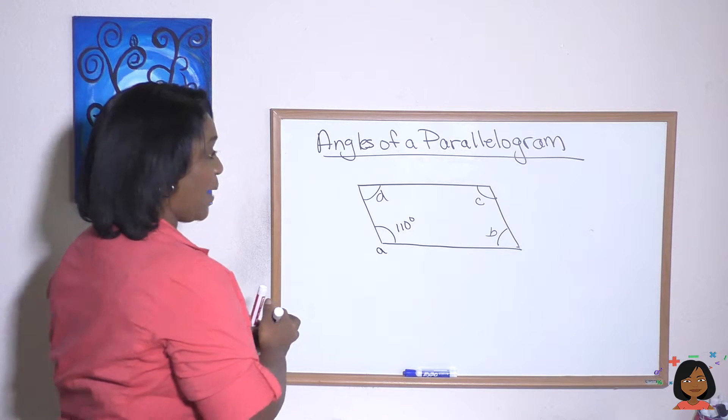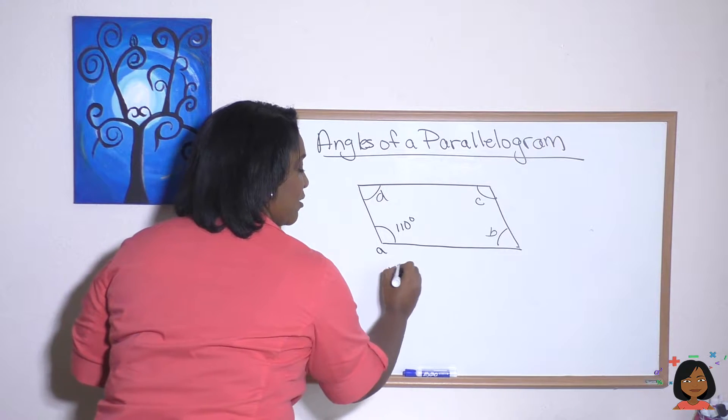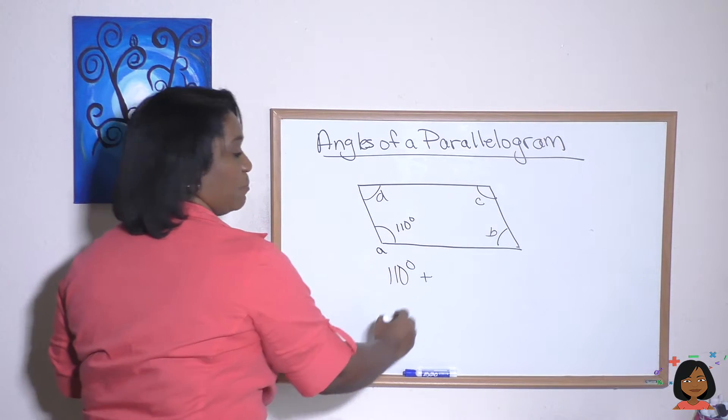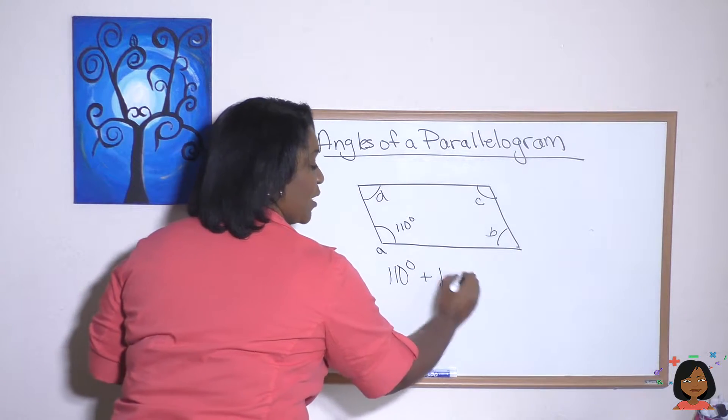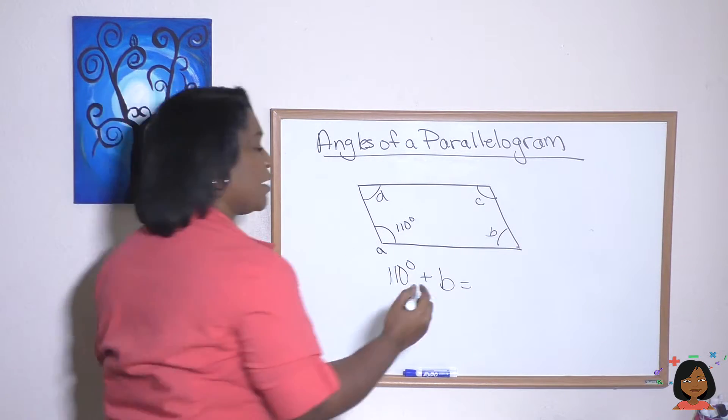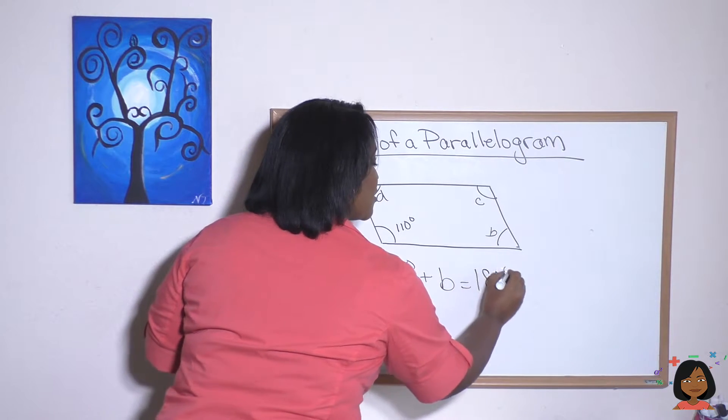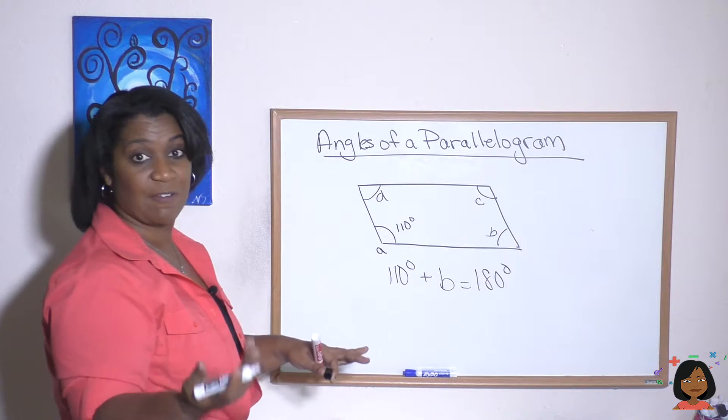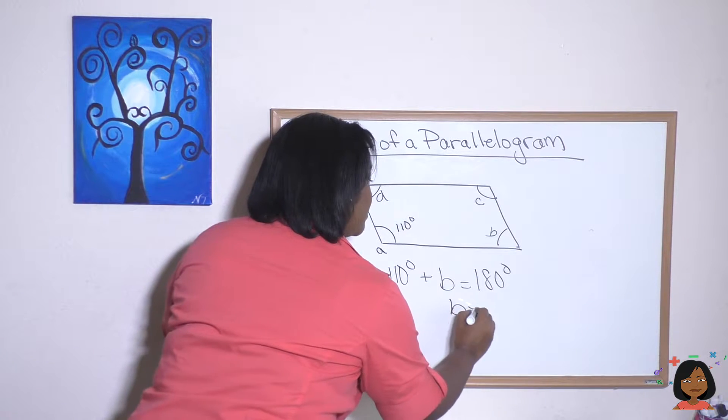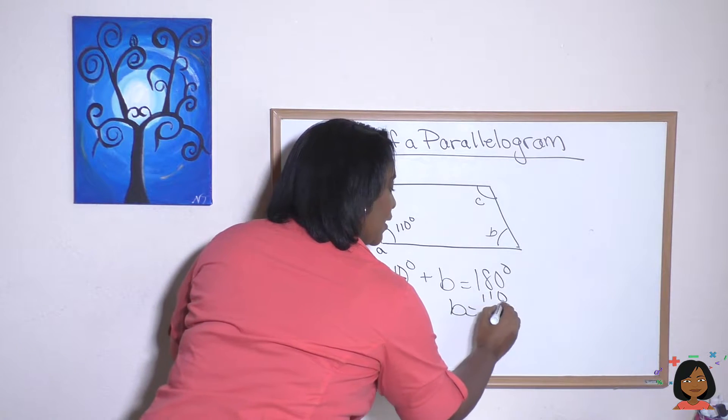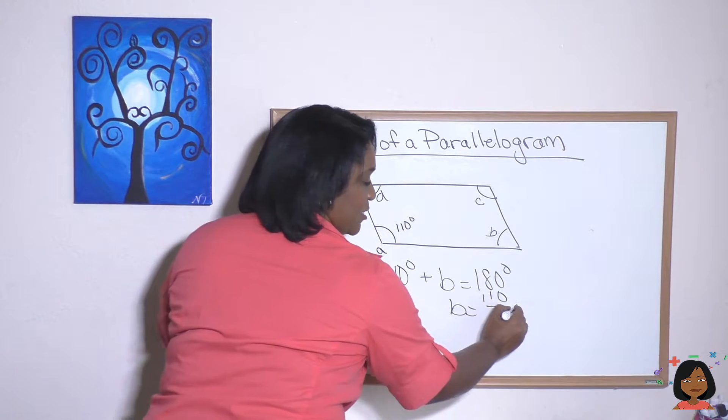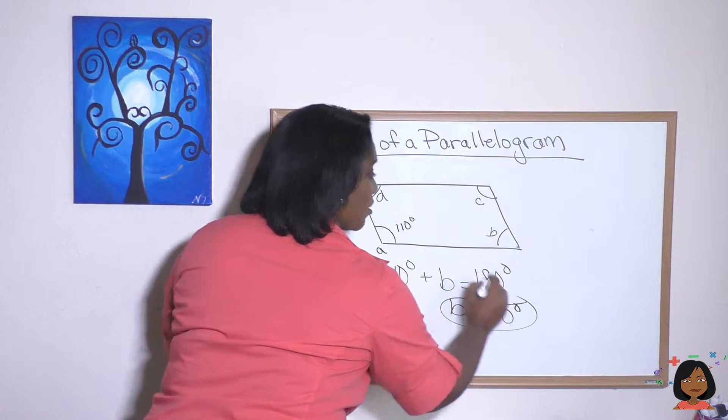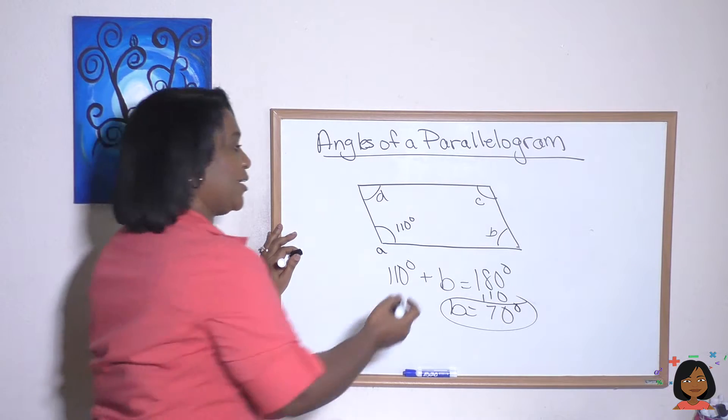So that means that A, which is 110 degrees, plus B, which we don't know, the whole thing will add up to 180 degrees. So to find B, all we have to do is subtract 110 from 180, and that gives us 70 degrees as our answer. So B is going to be 70 degrees.